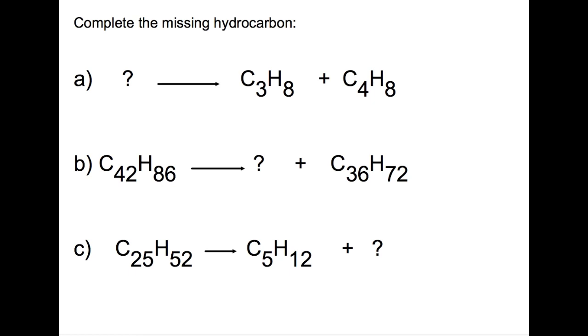In the first example we are trying to write out the formula of the large hydrocarbon that we started with. So we end up with carbon chains of 3 and 4 which means that we started with a carbon chain of 7.